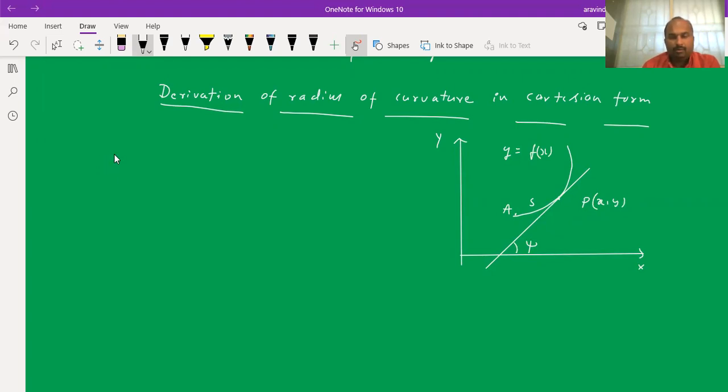Let us write an explanation of this. The tangent to the curve y equals f of x at P of x comma y makes an angle psi with the x axis.